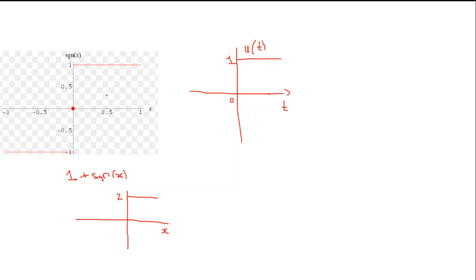To get a proper step signal, I need to divide this graph by two. So I define the expression as one-half times the quantity one plus signum of x. The graph of this expression will be half of the previous graph.